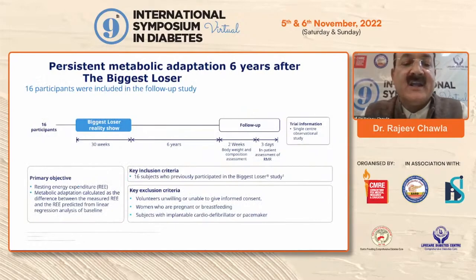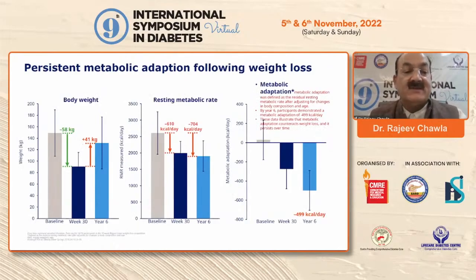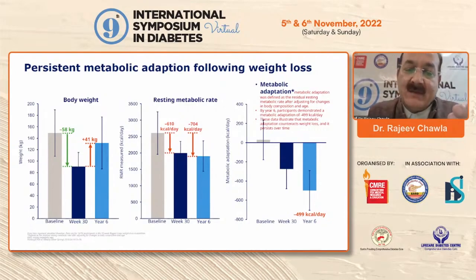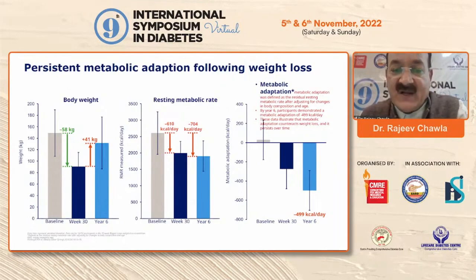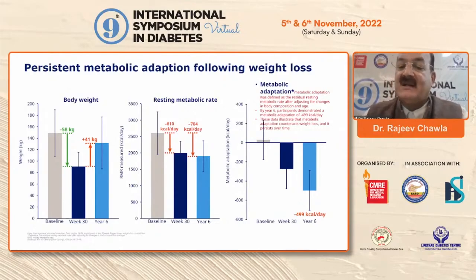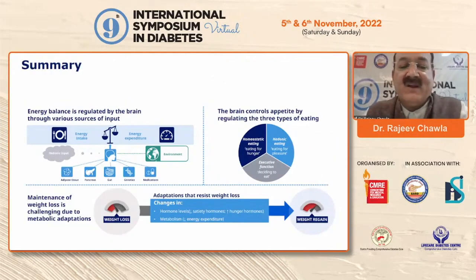There are going to be metabolic adaptations following weight loss. This adaptation resists weight loss achieved over 6 months or 1 year. This is primarily because of reduction in satiety hormones with increased hunger hormones like ghrelin. In the Biggest Loser study reality show data — a 6-year follow-up — patients lost 58 kg within 30 weeks, but within 6 years they were almost back to their original weight, having regained almost 41 kg. Their resting metabolic rate, which was minus 610 calories, actually went down further to minus 700 calories by year 5. By 6 years, most participants demonstrated a metabolic adaptation of almost 500 calories deficit, illustrating that metabolic adaptations counteract weight loss and persist over time.